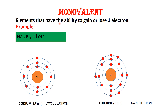Monovalent: elements that have the ability to gain or lose one electron. Examples include sodium, potassium, chlorine, etc. Here you can see the sodium atom. The outermost shell of the sodium atom contains only one electron. So in order to achieve its octet state, it should lose one electron. When the sodium atom loses one electron, the second shell, which is already in the octet state, will make this atom stable. So sodium is a monovalent atom because it has the ability to lose one electron.